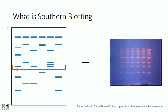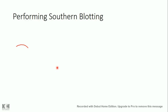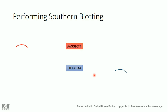Let's say I'm interested in visualizing a specific gene. First of all, I should know the sequence of this gene, and then I should design a complementary sequence. For example, if the gene sequence is A-A-G-G-T-C-T-T, then I design the complementary sequence T-T-C-C-A-G-A-A. This complementary sequence is called a probe. This probe is going to detect the sequence of interest because it is complementary to it.